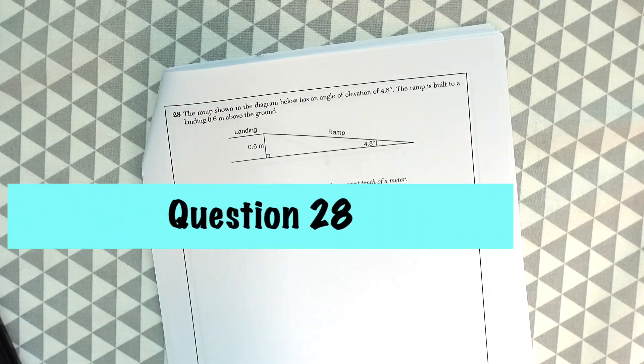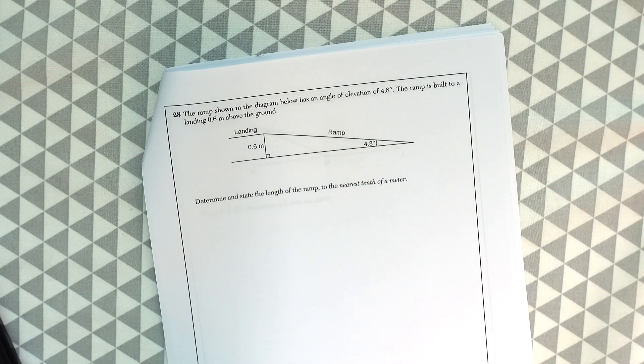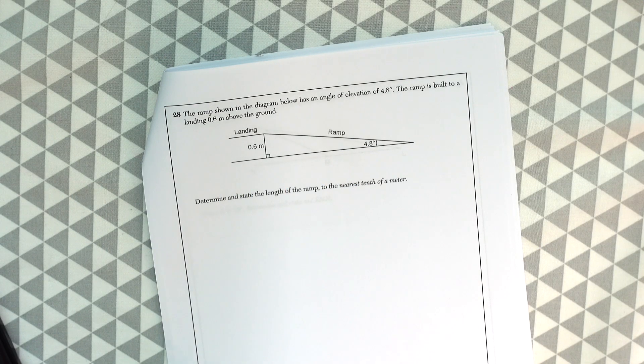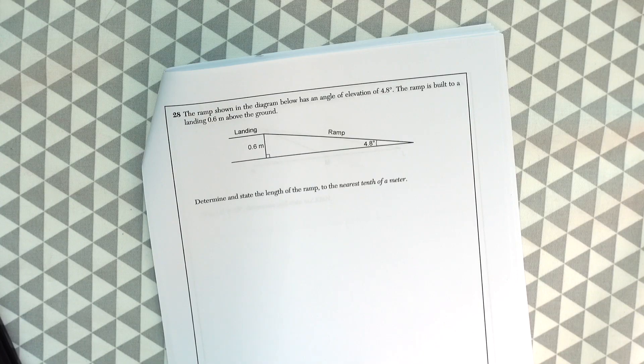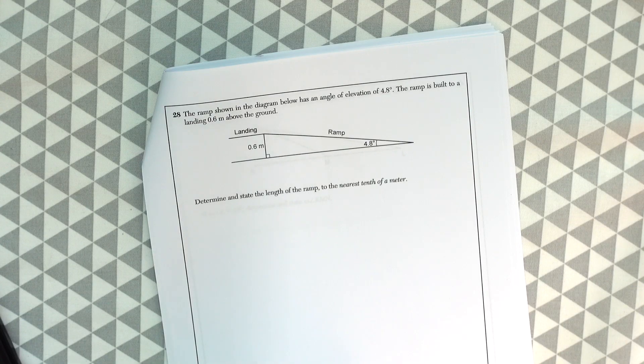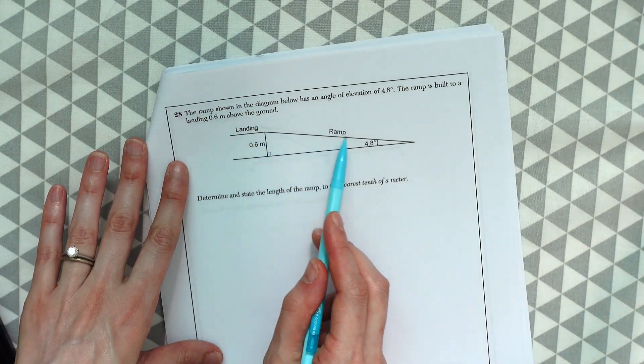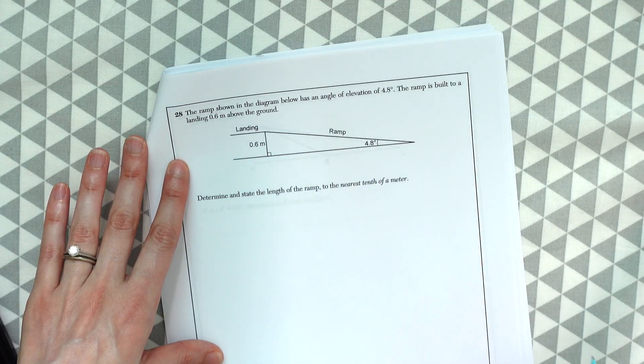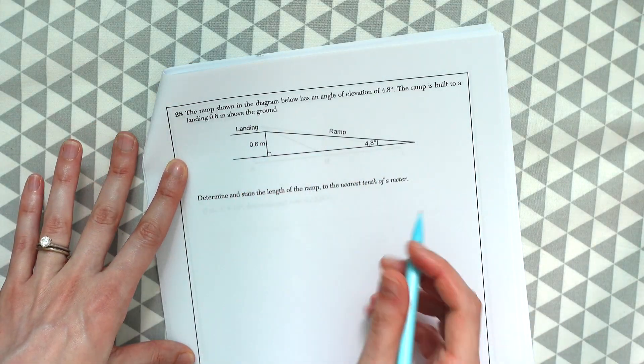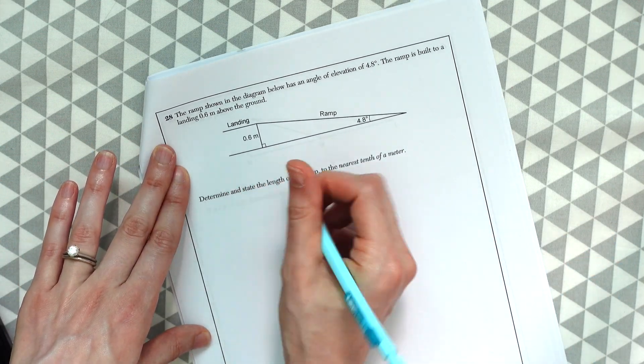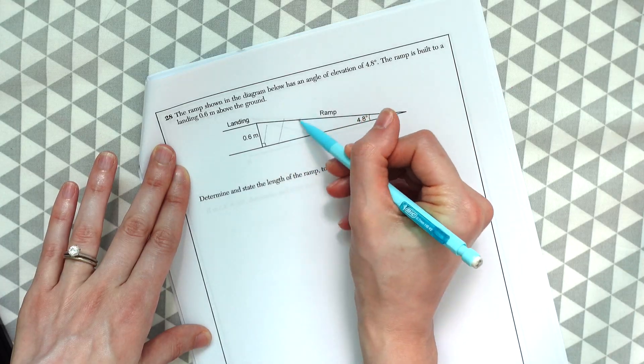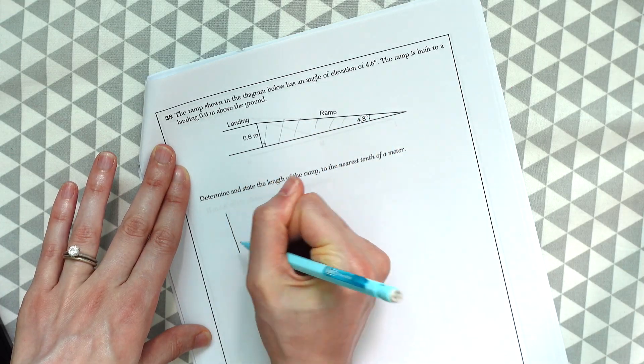Question 28. The ramp shown in the diagram below has an angle of elevation of 4.8 degrees. The ramp is built to a landing 0.6 meters above the ground. Determine and state the length of the ramp to the nearest tenth of a meter. So if you look at where the ramp is, that looks like that's going to be our hypotenuse. So let's draw out this right triangle that we're looking at down here.